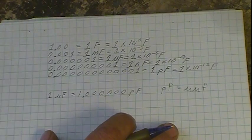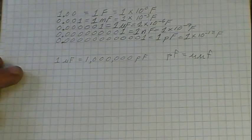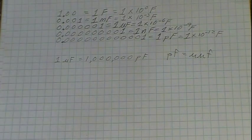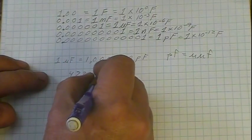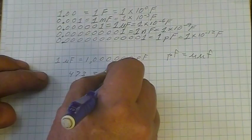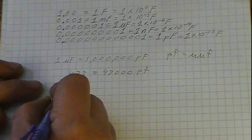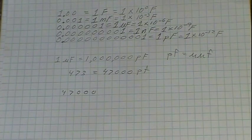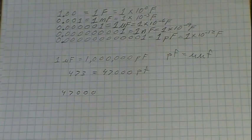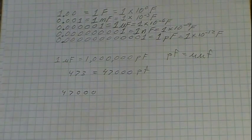Since most of our work is based off microfarads, we note that 1 microfarad equals 1,000,000 picofarads. Now let's look at that capacitor we had before — it came out to 4, 7, 3, which is the same thing as 47,000 picofarads. If I want to convert that to microfarads, that's something more I can understand when ordering capacitors.